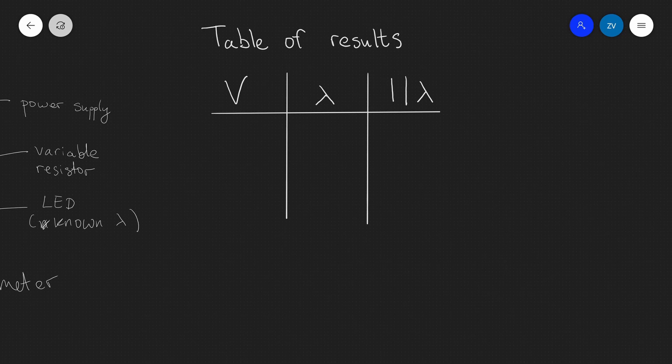Now our table of results is actually going to look like this. We're going to plot the potential difference V, which is measured in volts. Additionally, we're going to record the wavelength in meters, and we're also going to record 1 over the wavelength in units of m to the power of minus 1. Now you may be wondering why do we need to record 1 over the wavelength? And let's have a look at the analysis of this experiment, which will hopefully make this very, very clear.